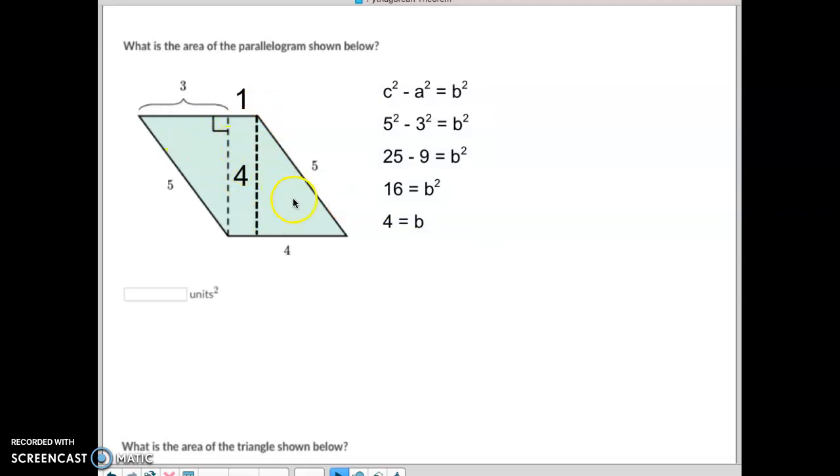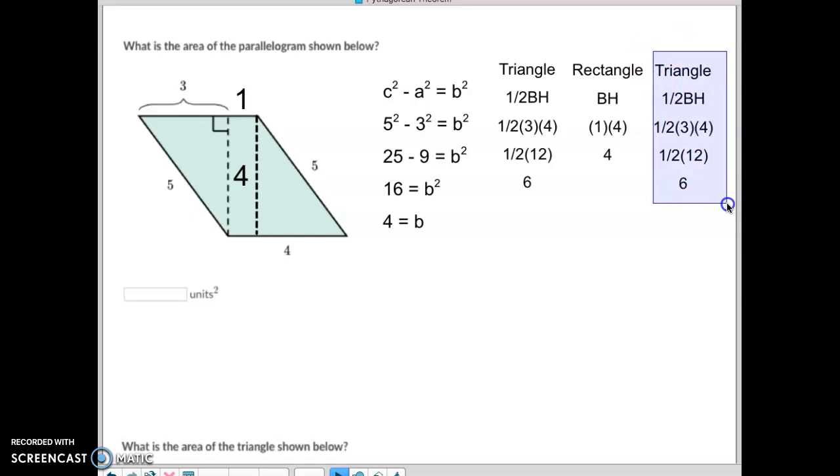Now we have two triangles and a rectangle to find the area and then add them together. For this first triangle, we simply take 1 half of the base times the height. The base is 3, the height is 4. So 3 times 4 is 12, half of 12 is 6. Since this triangle here is identical to this one, we're just going to do the triangle a second time. And then we have the rectangle, which is a 1 by 4 rectangle. So 1 times 4 is 4. We add the 6, the 4, and the 6 together. 6 plus 6 is 12, plus 4 is 16.